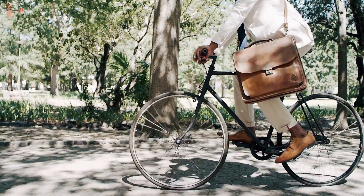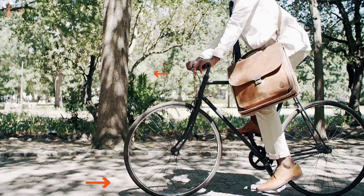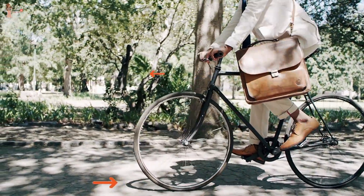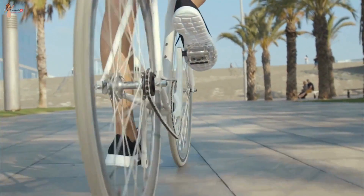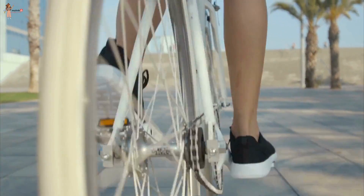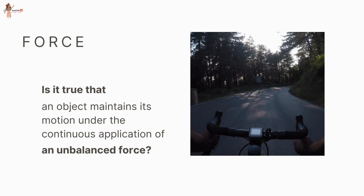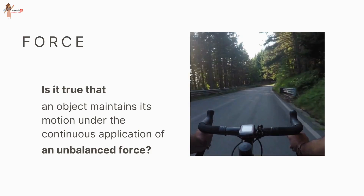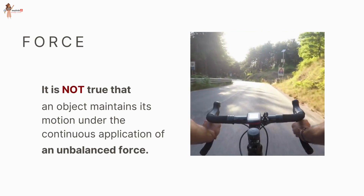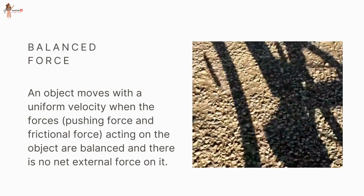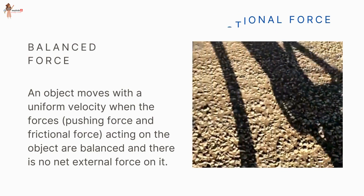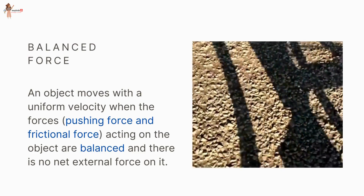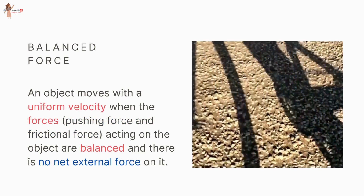What happens when we ride a bicycle? When we stop pedaling, the bicycle begins to slow down. This is because of friction forces acting opposite to the direction of motion. In order to keep the bicycle moving, we have to start pedaling again. An object moves with a uniform velocity when the pushing force and friction force acting on it are balanced and there is no net external force on it.